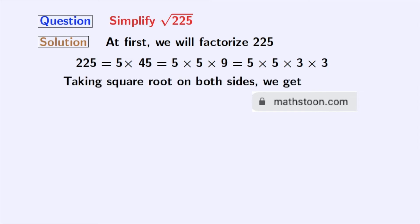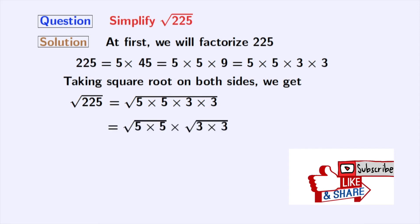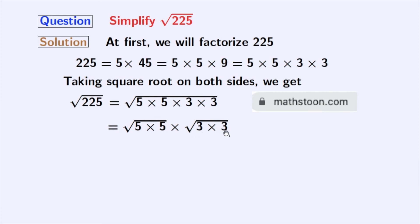Now we will take square root on both sides. Doing that we get square root of 225 equals square root of 5 times 5 times 3 times 3. Here we have used the rule of square root of x times y equals square root of x times square root of y. Here x is 5 times 5 and y is 3 times 3.